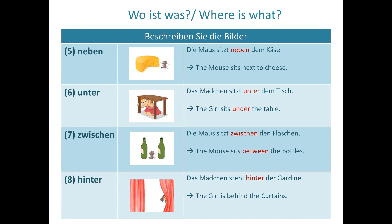You can see a piece of cheese and next to it is a mouse. 'Die Maus sitzt neben dem Käse' — the mouse sits next to the cheese. Then: 'Das Mädchen sitzt unter dem Tisch' — the girl sits under the table. And: 'Die Maus sitzt zwischen den Flaschen' — the mouse sits between the bottles.